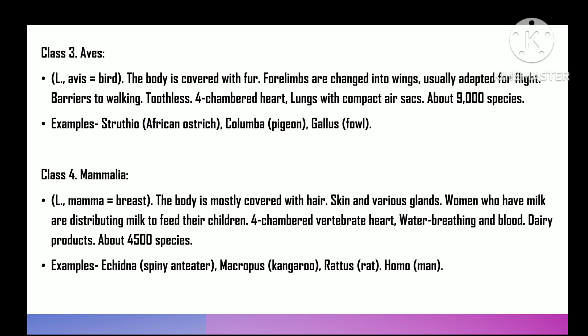Class 4 is Mammalia — 'mamma' means breast. Body usually covered with hair, skin with various glands. Females with mammary glands which secrete milk for suckling the young. Heart four-chambered, warm-blooded, air-breathing vertebrates. Approximately 4500 species. For example, Echidna (spiny anteater), Macropus (kangaroo), Rattus (rat), and Homo (man).